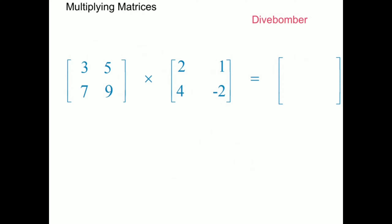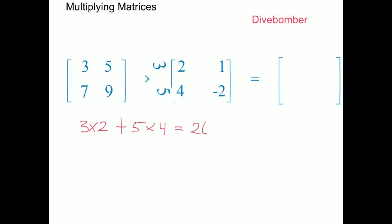Row 1 comes across and dive bombs column 1. We get 3 times 2 plus 5 times 4, which is equal to 26 — we know that from the previous example. This 26, because it's row 1 times column 1, goes into the result at row 1 column 1.